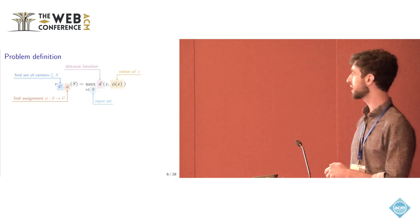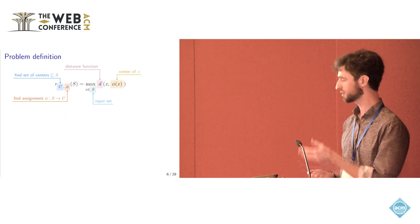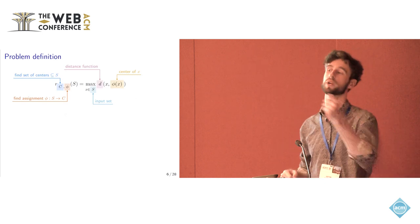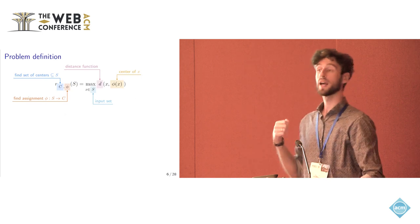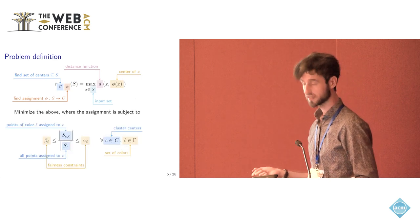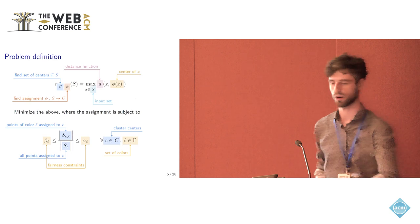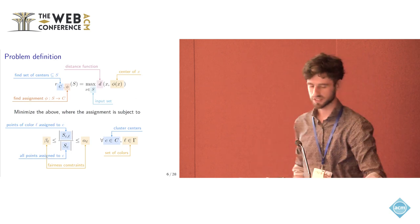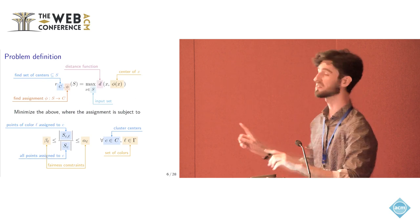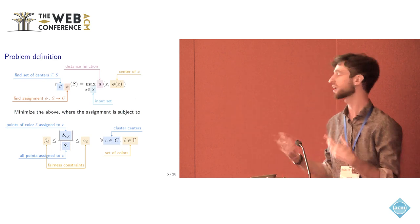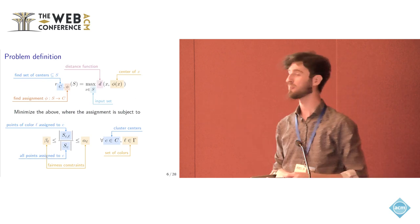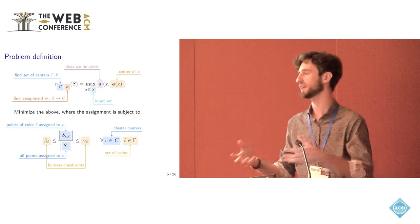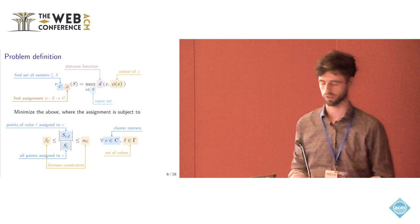And the metric that we want to minimize is basically the radius. So it's the maximum distance of any point to its assigned center under the constraint that the fraction of colored points of a given color in each cluster is within some specified bounds. So to make an example, if you set alpha and beta both to 50%, then you want half the points of each color in each cluster if you are working with only two colors.